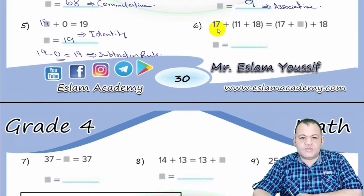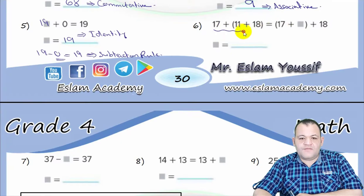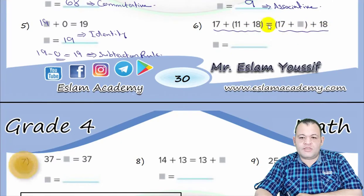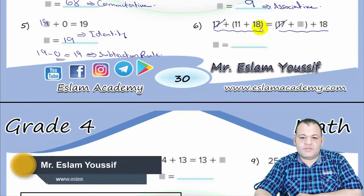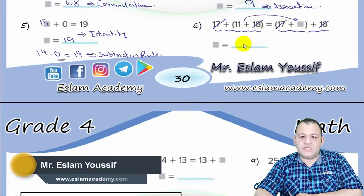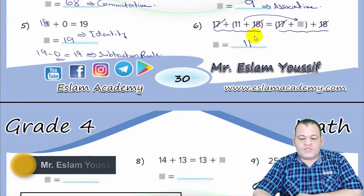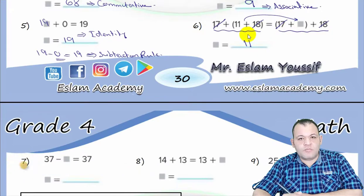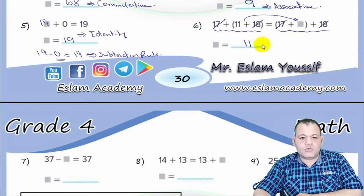Question number six: 17 plus 11 plus 18 equals the right-hand side. We have 17 and 17, and 18 and 18, so the missing number is 11. The order is the same but with different numbers inside the parentheses, so this is the associative property.